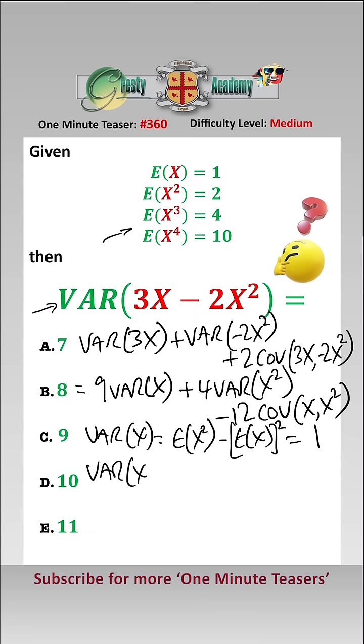Var of X² is equal to E(X² squared), which is E(X⁴), minus E(X²) squared. Again from the numbers above, that is 6.